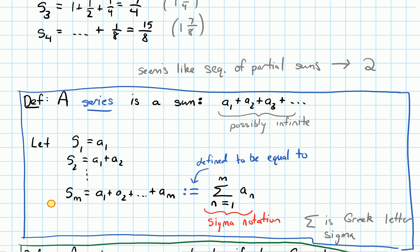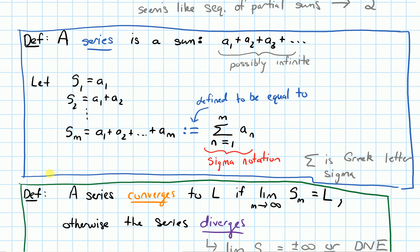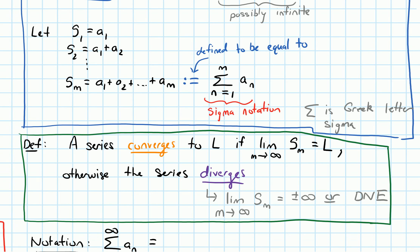So next I want to talk about how we know when a series converges and when it diverges. We say that a series converges to a single number L if the limit as m goes to infinity of s sub m equals L — in other words, if these partial sums converge to L. Otherwise, if that doesn't happen, we say that the series diverges. The ways a series might diverge are: if the sequence of partial sums has a limit of positive infinity or negative infinity, or if it's generally something that does not exist. Those are the types of things that would make a series diverge.